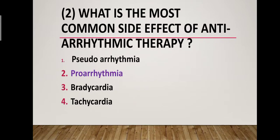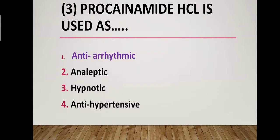Question number two: What is the most common side effect of antiarrhythmic therapy? Option one: shadow arrhythmia. Option two: proarrhythmia. Option three: bradycardia. Option four: tachycardia. Correct answer is option two — proarrhythmia. Proarrhythmia is the most common side effect of antiarrhythmic therapy.